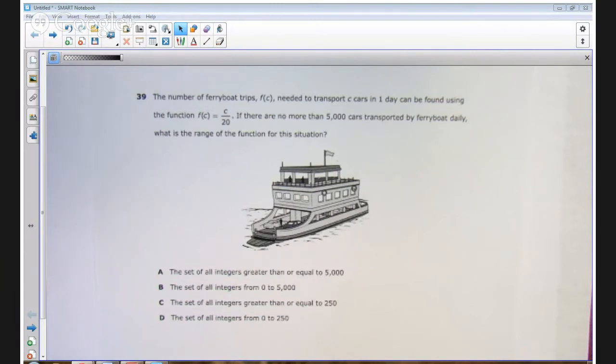Let's read the item. The number of ferry boat trips, F of C, needed to transport C cars in one day can be found using the function F of C equals C divided by 20. If there are no more than 5,000 cars transported by ferry boat daily, what is the range of the function for this situation?